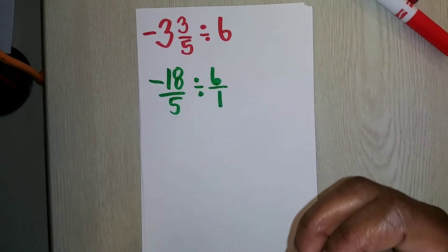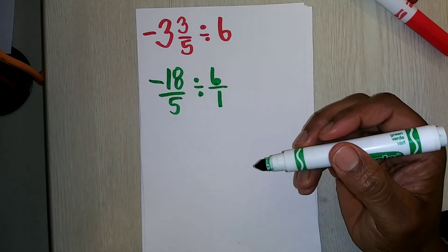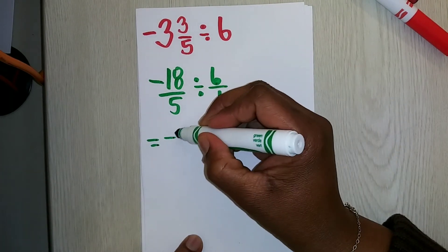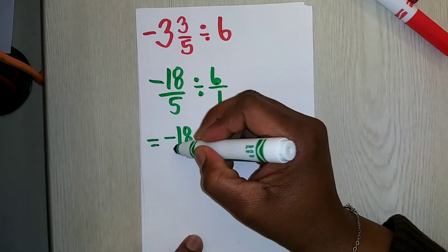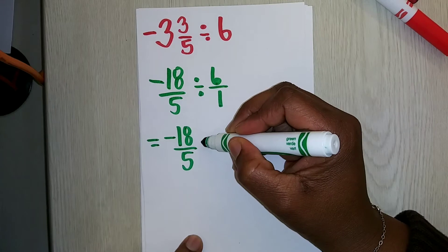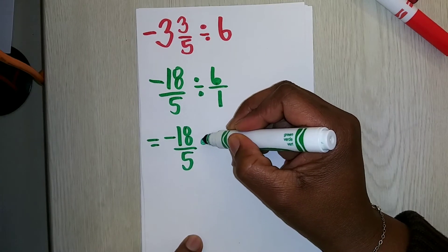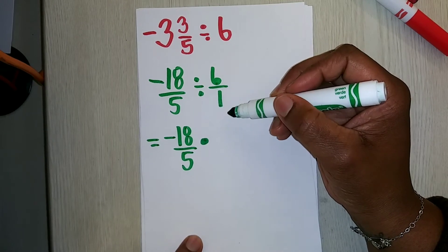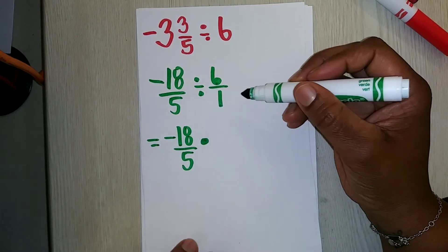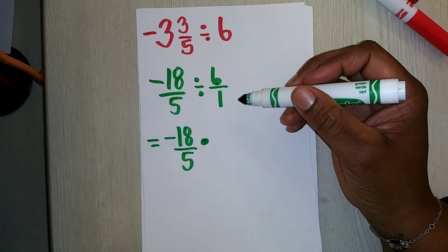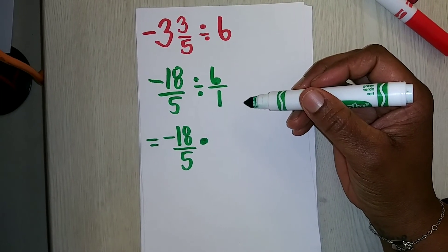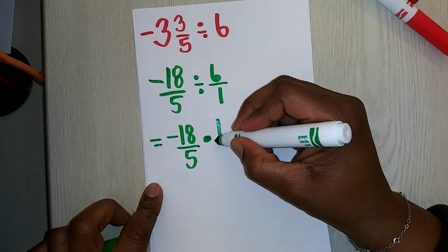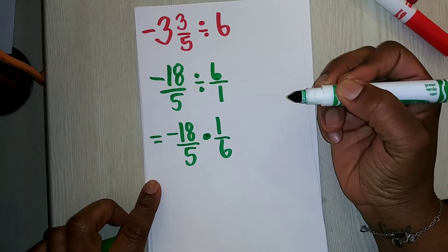The next thing I want to do is convert this to a multiplication problem. I'm going to keep negative 18 fifths, and then I'm going to change this problem to a multiplication problem. I'm going to write the multiplicative inverse, which is the reciprocal of 6 divided by 1, which is 1 divided by 6 or 1 sixth.